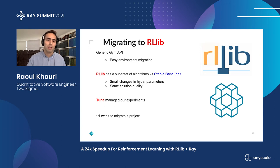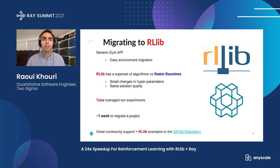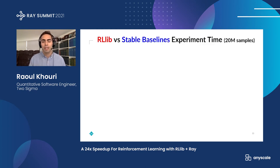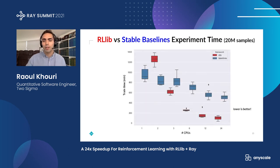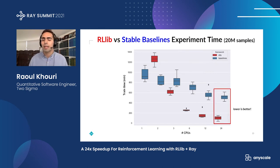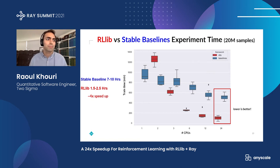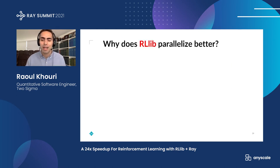There was great community support and a lot of RLLib examples in their GitHub repository. Once we migrated and got the same solution quality, we decided to benchmark the runtime of the experiments. On the x-axis we plotted the number of CPUs, and on the y-axis the amount of time the experiment took. On 24 CPUs, we were able to get our experiments from 7 to 10 hours down to basically 2 hours — a nice 4x speedup. But we were really curious why RLLib was parallelizing better, since in theory it's doing the exact same thing.